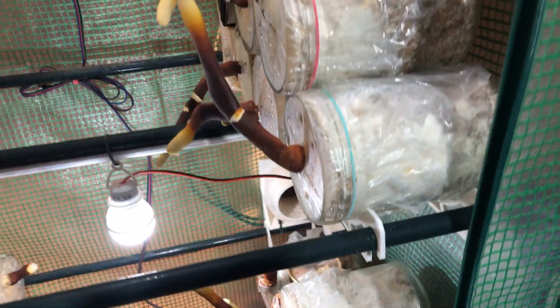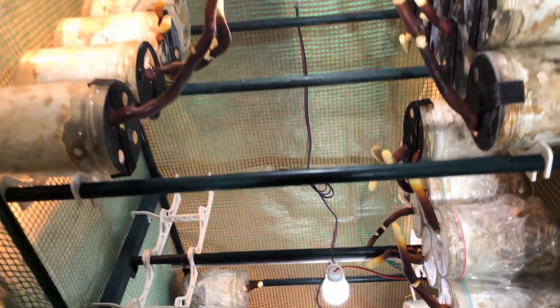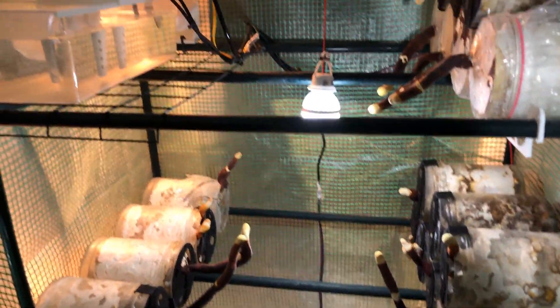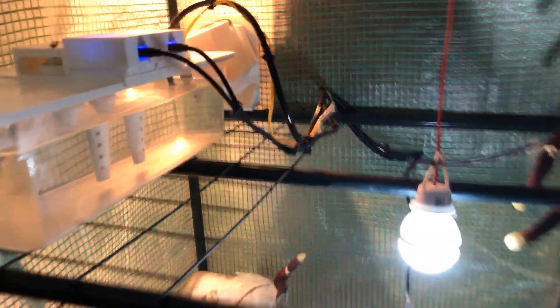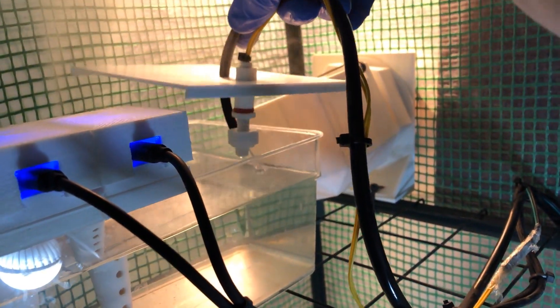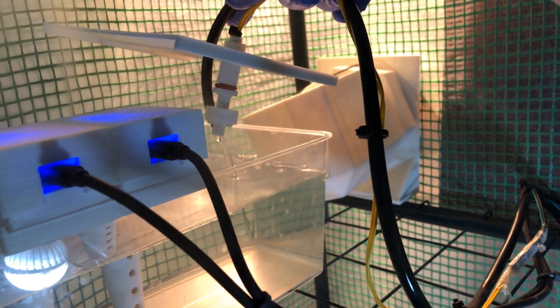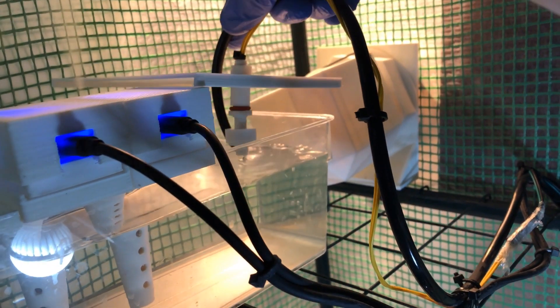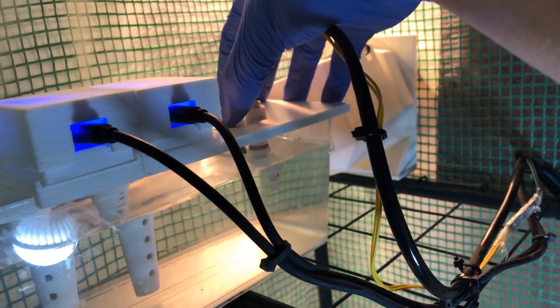Moving on, let me show you my Martha setup, where I have reishi jars placed on a specially designed carrier system. This setup allows me to achieve a high stacking density while making it very easy to place the jars in the right position. This is a great way to optimize space and increase your yield.